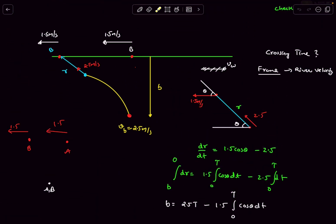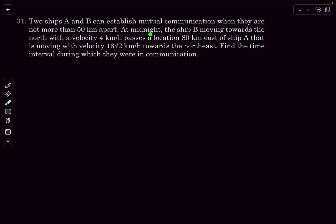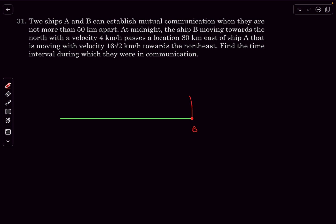Now let's discuss Problem 31. Two ships A and B can establish mutual communication when they are not more than 50 kilometers apart. At midnight, ship B moves north at 4 km/h and passes a location that is 80 km east of ship A.